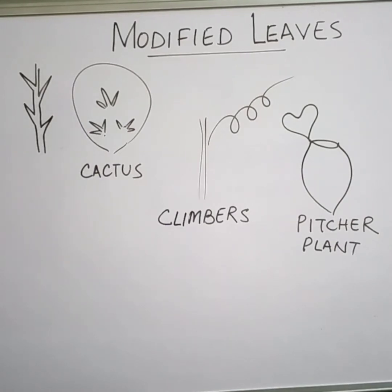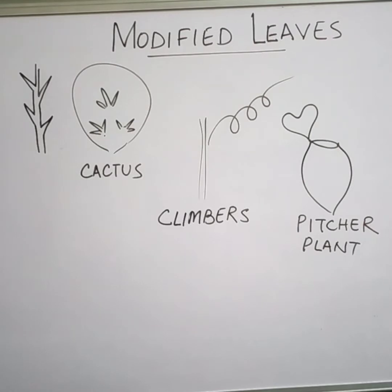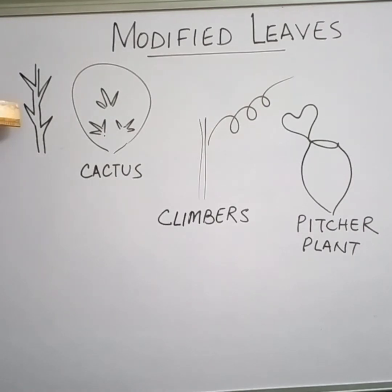In the first case, the modified leaves are reduced to spines. This reduces the loss of water in desert plants. The modified leaves also protect the plants from animals — if animals attack, the spines protect the plant.